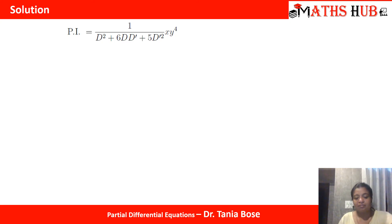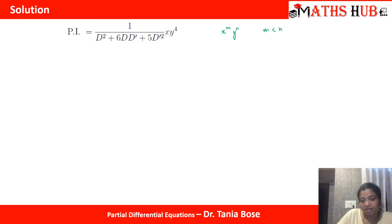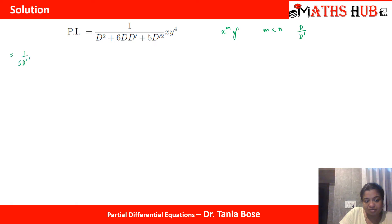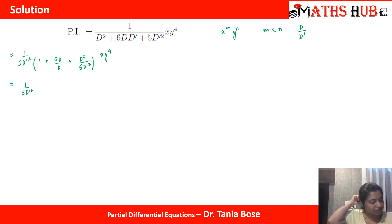Now let's calculate the particular solution: P.I. = 1/(D² + 6DD' + 5D'²) · x·y⁴. Comparing with x^m · y^n, m = 1 and n = 4, so m < n — we expand as D/D'. To do this we take out 5D'² as a common factor, writing 1/(5D'²) · 1/(1 + 6D/D' + D²/5D'²) · x·y⁴, then bring the bracket to the numerator as (1 + 6D/D' + D²/5D'²)^(−1).